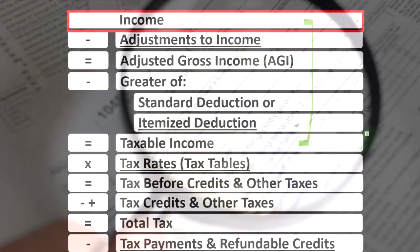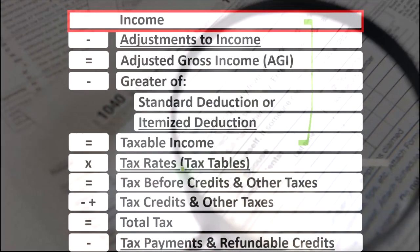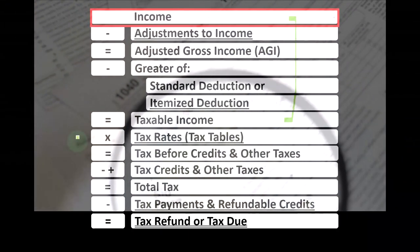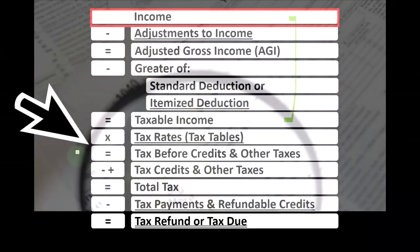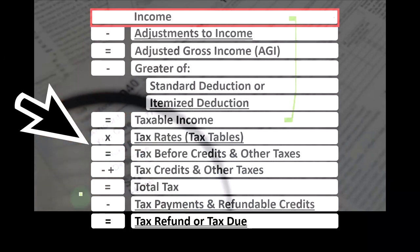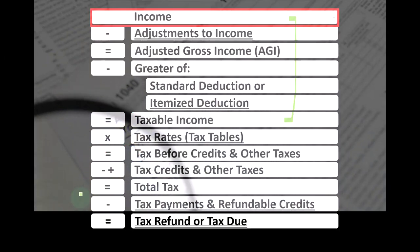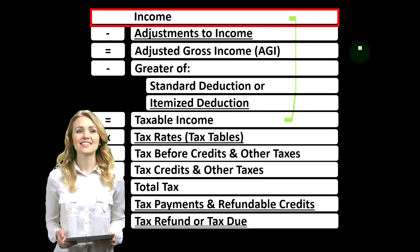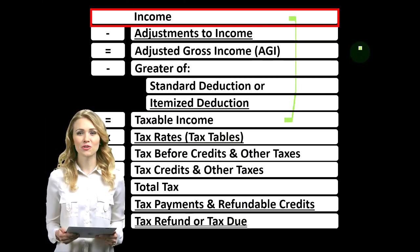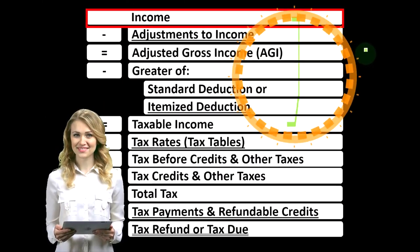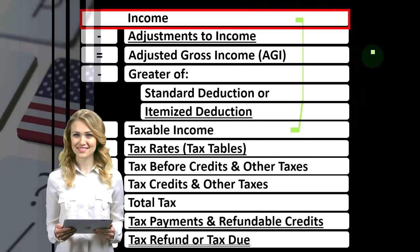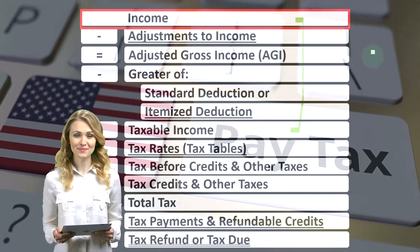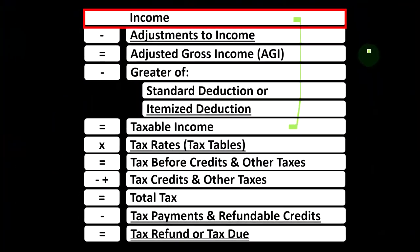The second half of the equation is focused on the calculation of the tax, then applying any other taxes, credits, and payments to get to the tax refund or the amount due. So the top portion functions like an income statement type of calculation to get down to that taxable income, as we're focusing in on the income line.